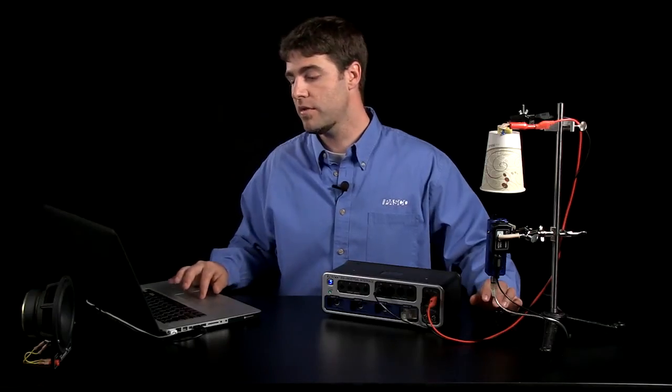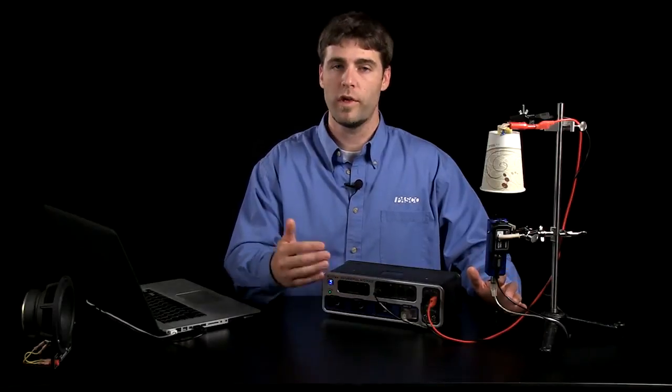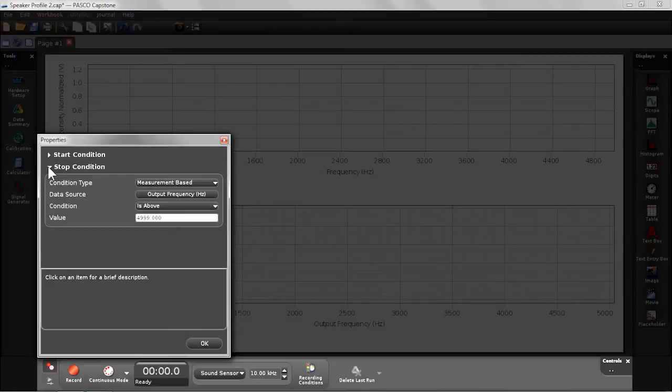In addition to those controls, I also have set up a stop condition that's going to allow the software to automatically stop recording data when the frequency reaches 5000 Hertz, or as you can see here, the output frequency is above 4999 Hertz.